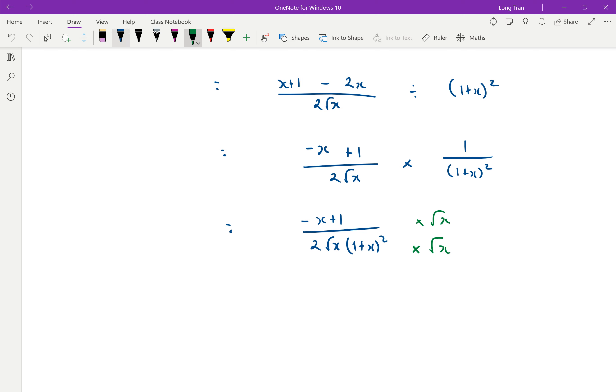If you did do that, you would get now negative x to the power of 3 over 2, half plus 1, yep, plus root of x all over, and the x's cancel out. So that becomes 2x, 1 plus x squared.